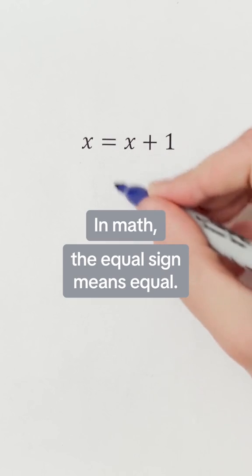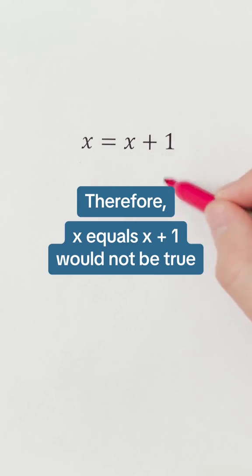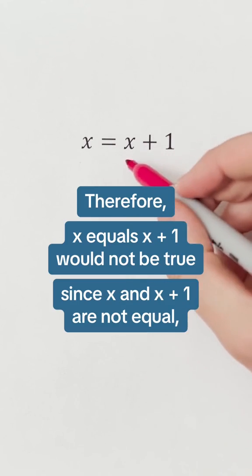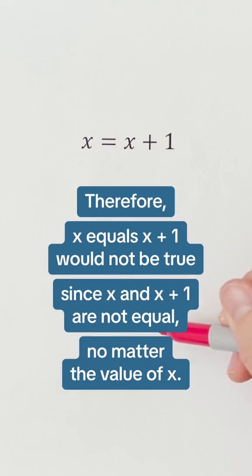In math, the equals sign means equal. Therefore, x equals x plus 1 would not be true, since x and x plus 1 are not equal, no matter the value of x.